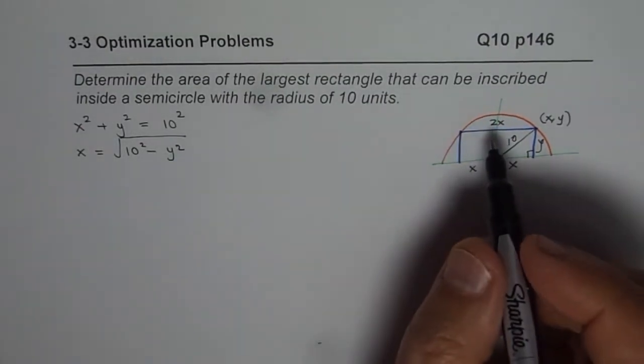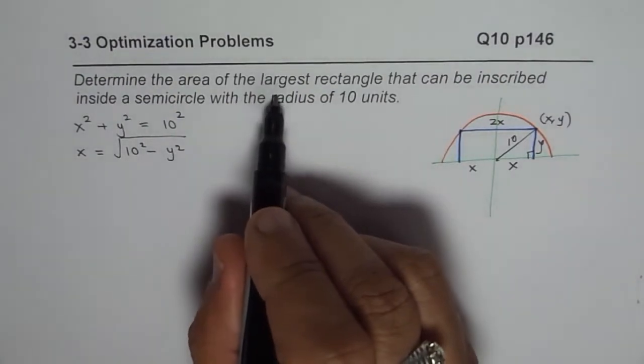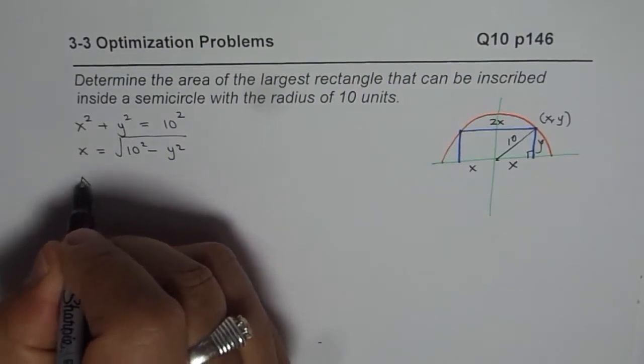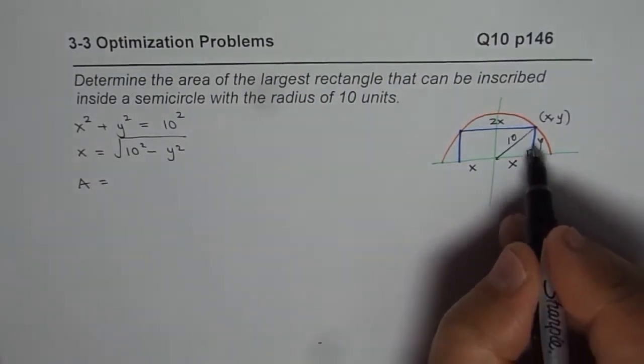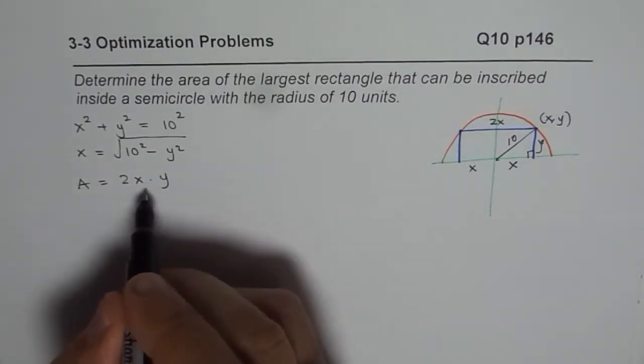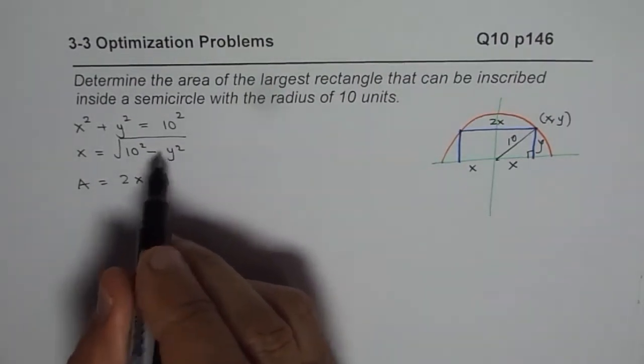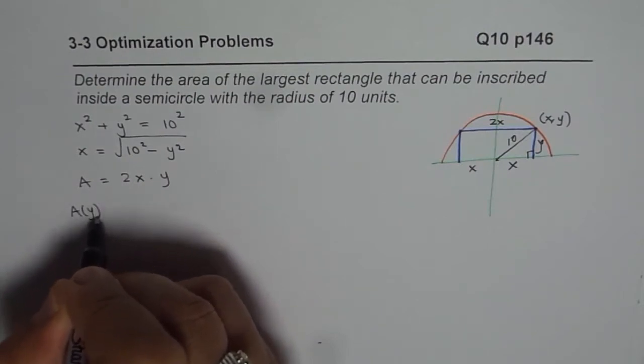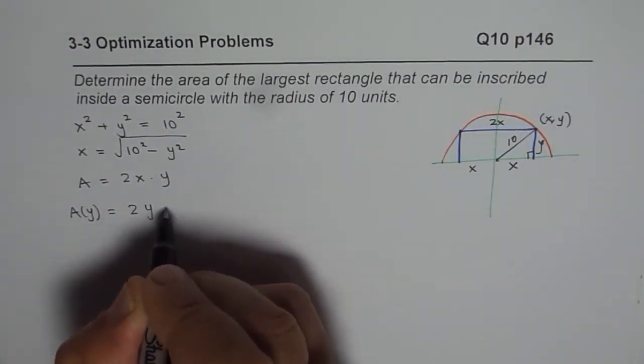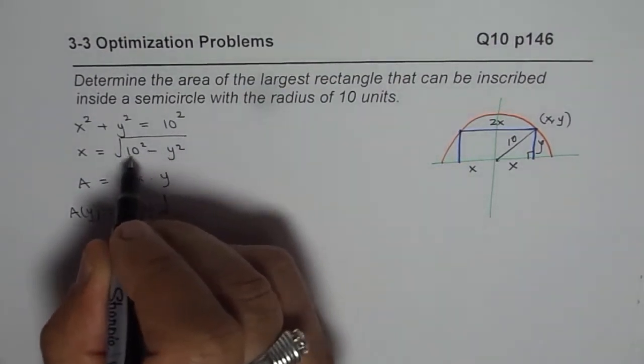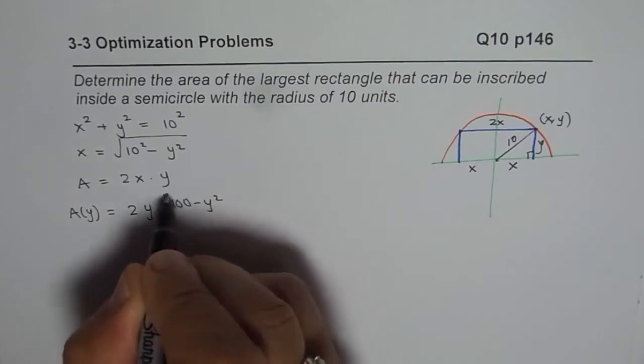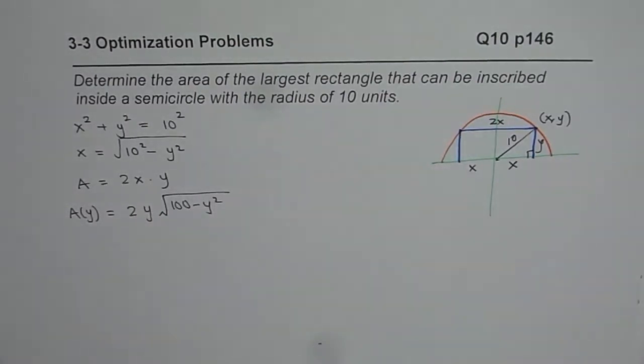Now what we need to do is we need to find the largest rectangle area. So area is in this particular case area will be equals to 2x times y. We can write x in terms of what we just found. So we get area in terms of y. So we can write this as 2y times square root of 100 minus y squared. So that is what you get.